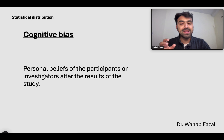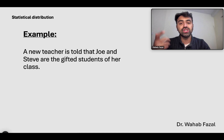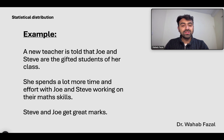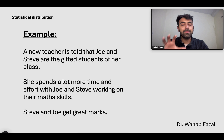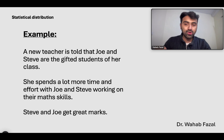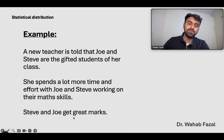To take an example of how someone's belief might change results: a new teacher is told that Joe and Steve are the gifted students of her class. She spends a lot more time and effort with Joe and Steve working on their math skills, and Steve and Joe get great marks. This is a specific type of cognitive bias known as observer bias — also called observer expectancy bias or a self-fulfilling prophecy. You tell the researcher at the start that something is great, the researcher believes it, makes the participant believe it, and it becomes a self-fulfilling prophecy. The teacher actually made them gifted students.